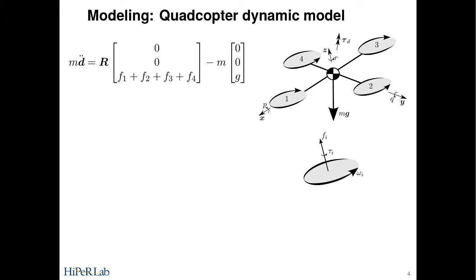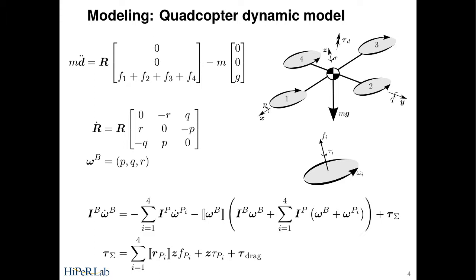If you want to write down the dynamics, you'd start with the translational dynamics. You have the linear acceleration of the vehicle as a function of the forces that the propellers produce, F1 to F4 in this case. R is the rotation matrix that describes the orientation of the vehicle. The rotation matrix evolves according to a relatively simple differential equation itself, where P, Q, and R are the three components of angular velocity.